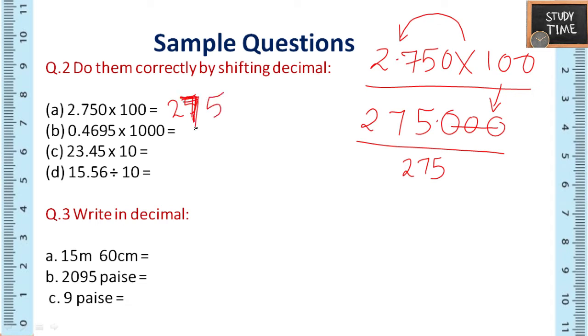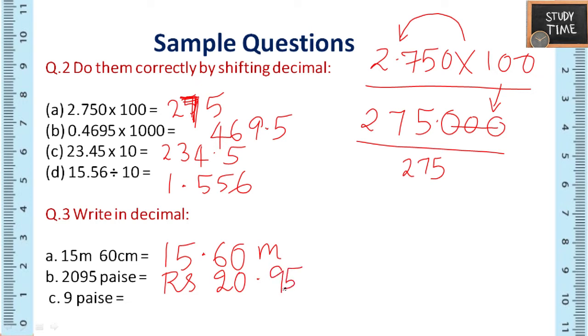Similarly you can find the other. So here it is 275. Next for this question the answer is 469.5. The next question it is 234.5. For the last question when you divide you will be getting 1.556. Write in decimal so: 15.60 meter.